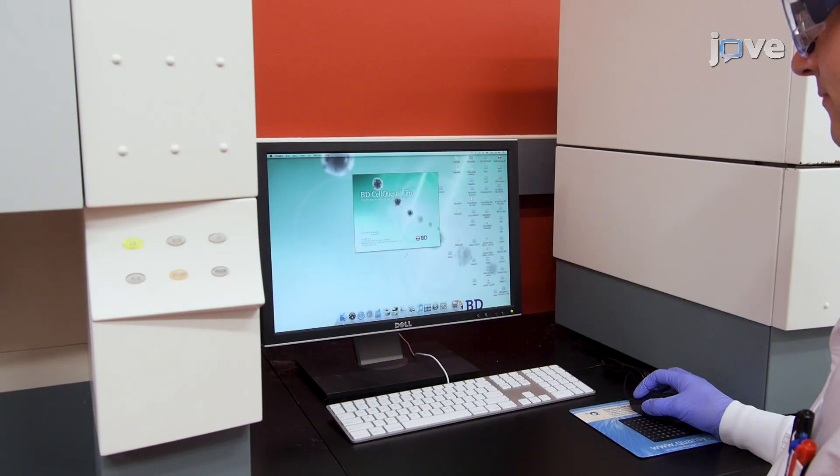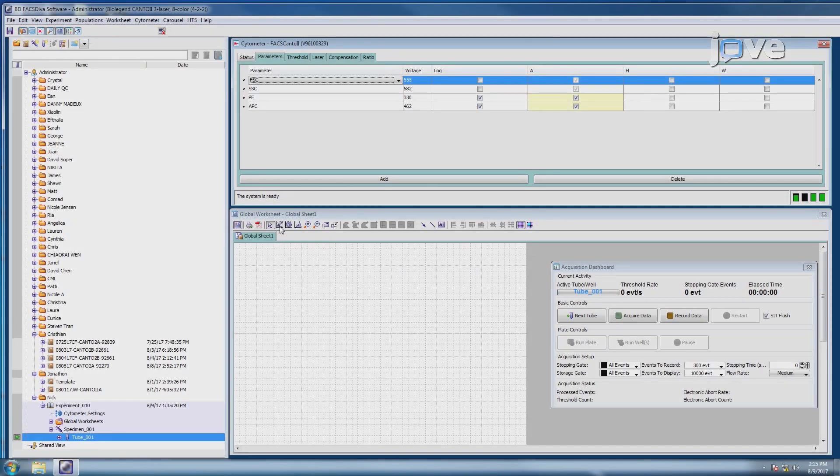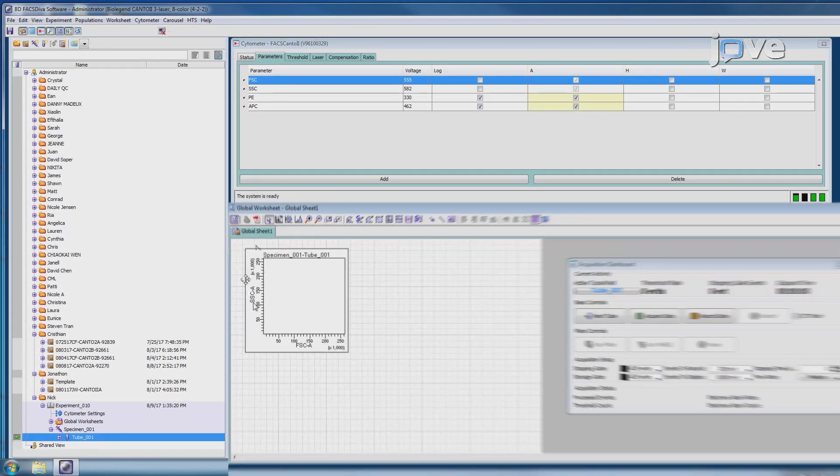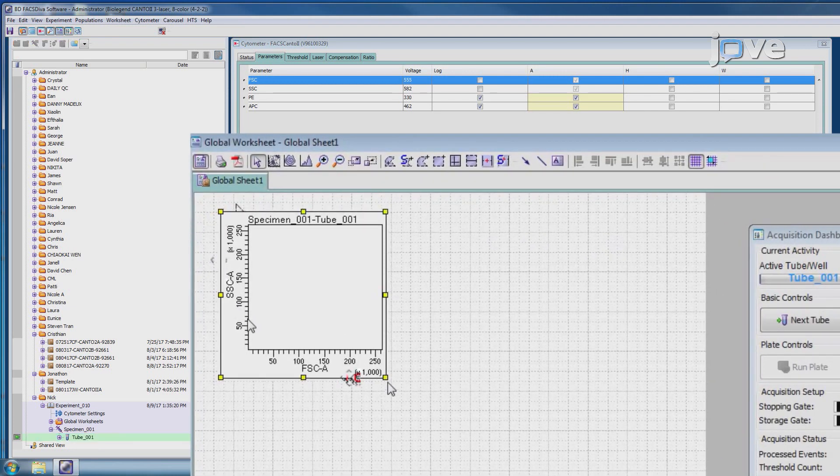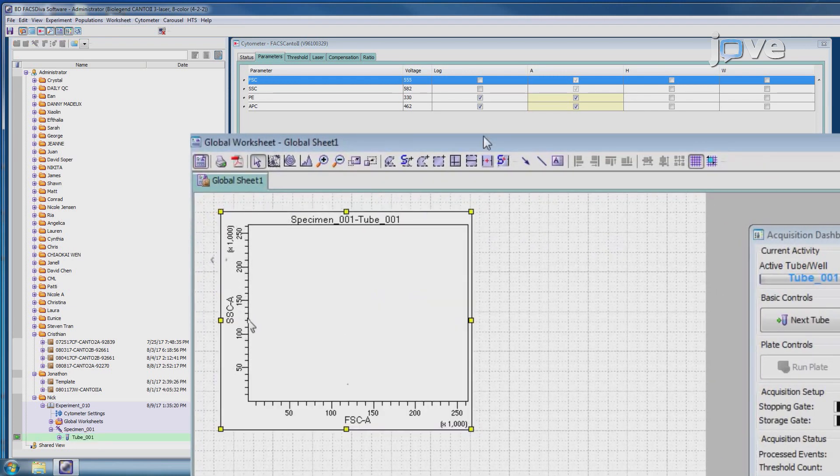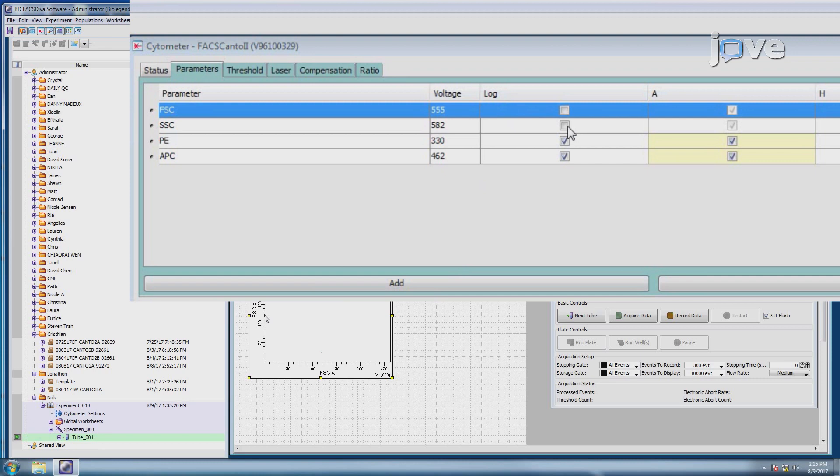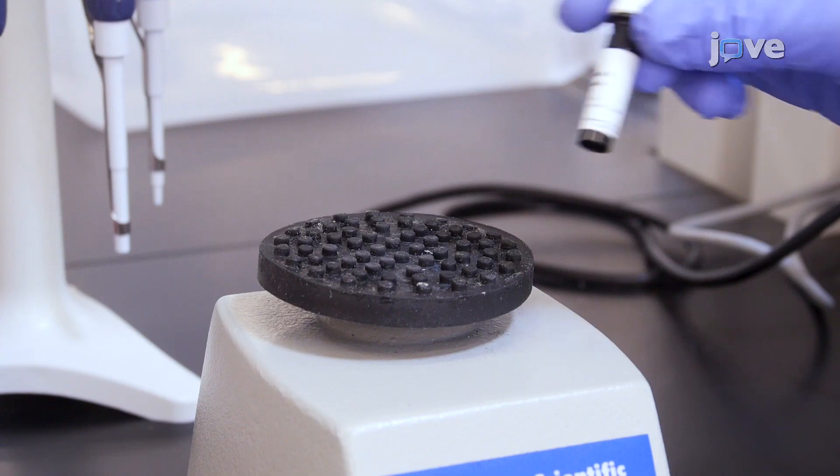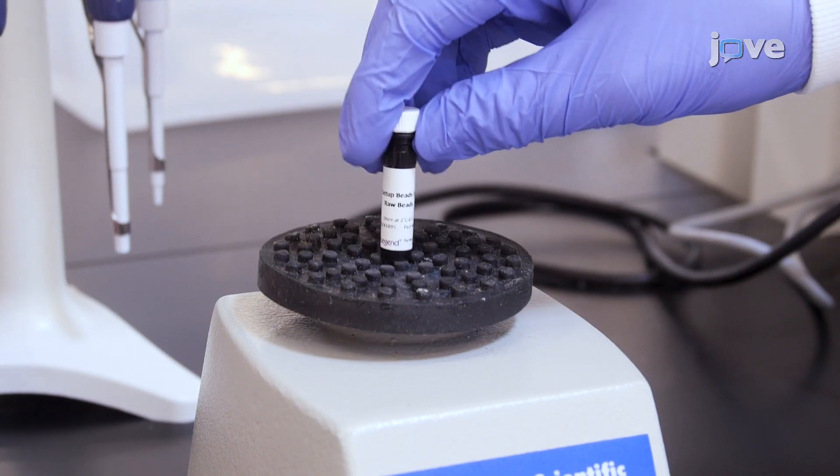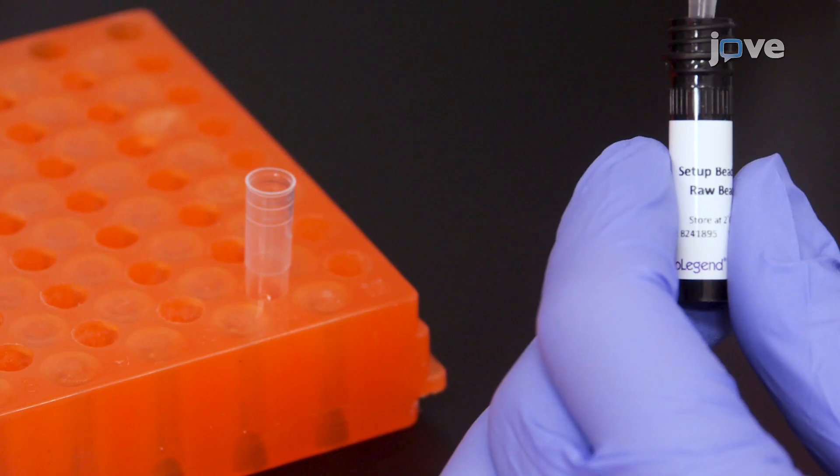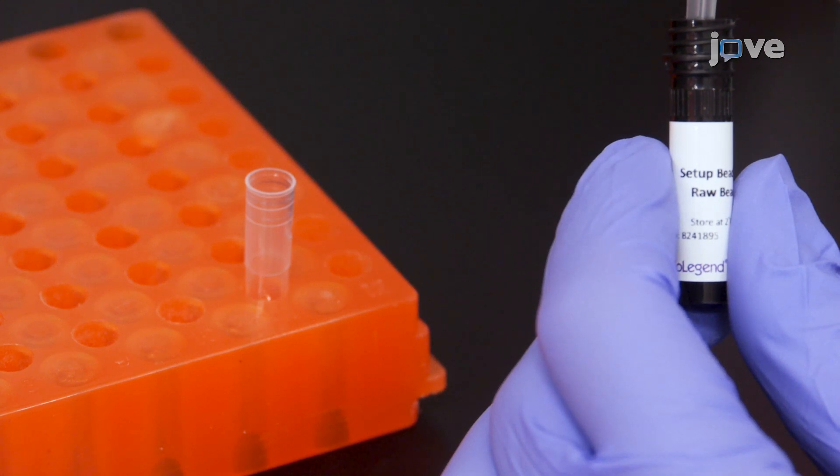Start up the flow cytometer and acquisition software according to the manufacturer's instructions provided with the instrument. Create a dot plot with forward scatter on the x-axis and side scatter for the y-axis. Set forward scatter and side scatter to linear mode. Vortex the vial of raw beads included in the kit for 30 seconds to resuspend the beads. Transfer 400 microliters of the raw beads to a new FACS tube.